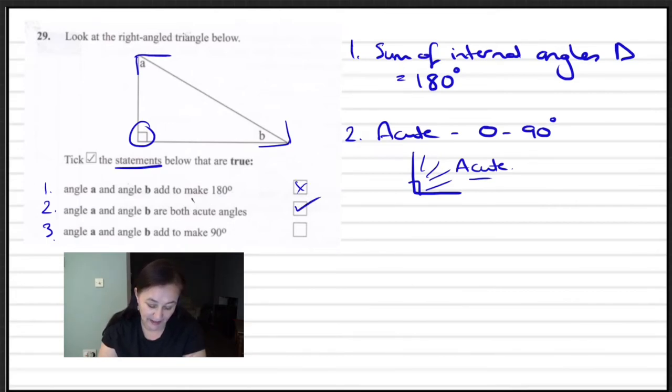We've got number three. Angle A and angle B add to make 90. Well if we know that the sum of all the internal angles is 180 and we take away what we have here which is the right angle, if we take that away which is 90 we get 90. So therefore we can deduce that A plus B do actually add up to 90 and that is in fact correct.